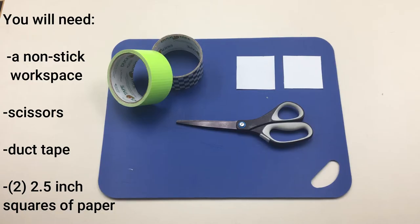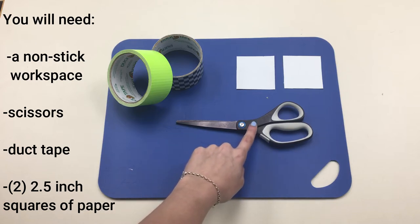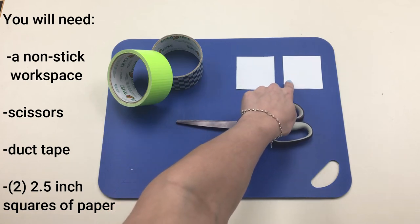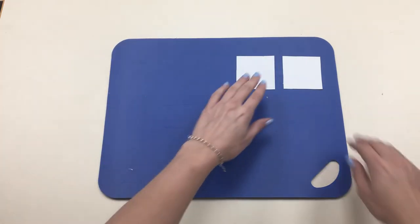To make our duct tape bookmarks we are going to need a non-stick workspace, scissors, duct tape, and two two and a half inch squares of paper. Ask your parents to help cut those.